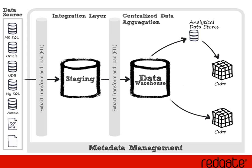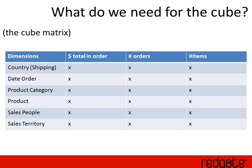For our example, the first thing we do is go to our customers, clients, or board-level managers — whoever needs analytical information — and ask what information they would like to see and how they'd like to slice it. In today's example we're going to build a data mart covering the total amount of money made in orders, the number of orders, and the number of items per order. We'd also like to slice that information by shipping country, order date, product category, product sales people, and sales territory. Having that information, we're ready to start our example.